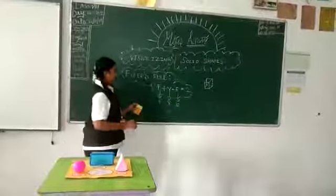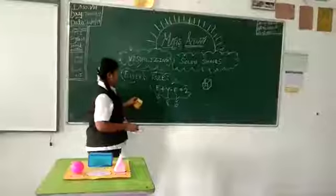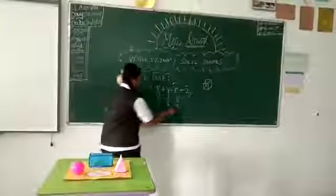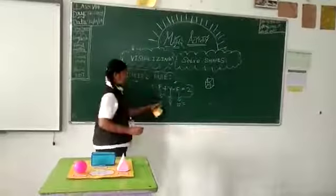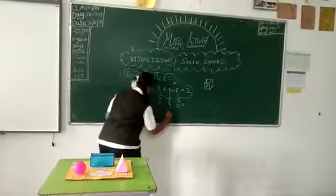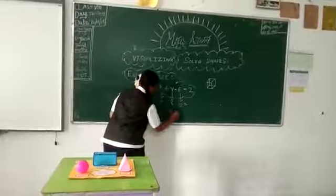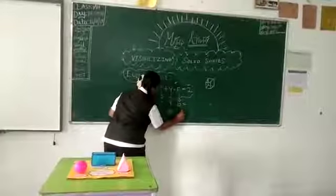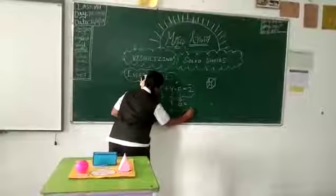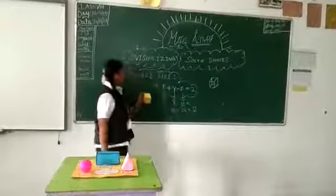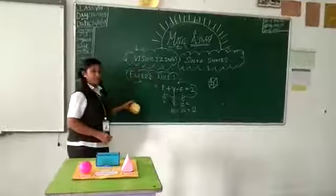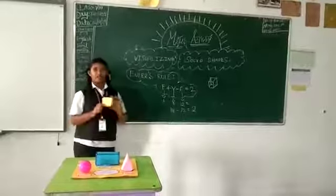Now we are going to check Euler's rule or not. 6 plus 8 is 14. 14 minus 12 is equal to 2. Now Euler's rule is verified for cube.